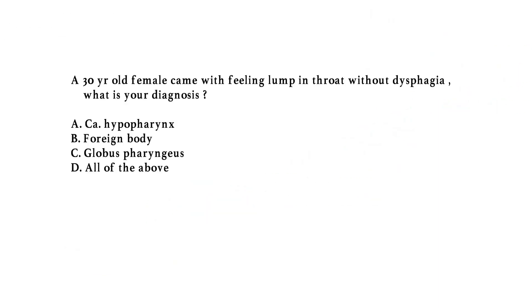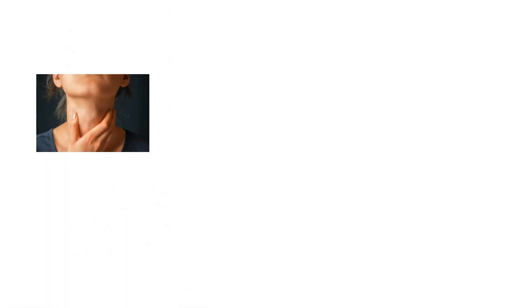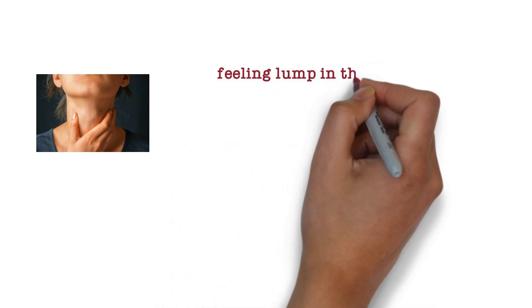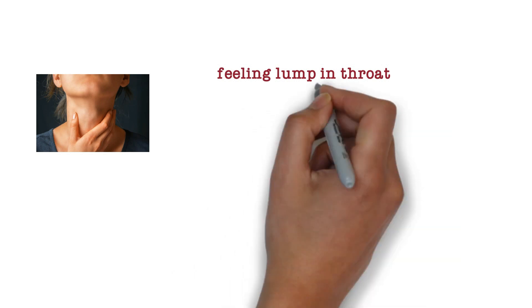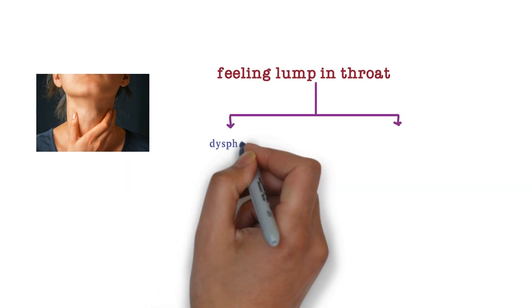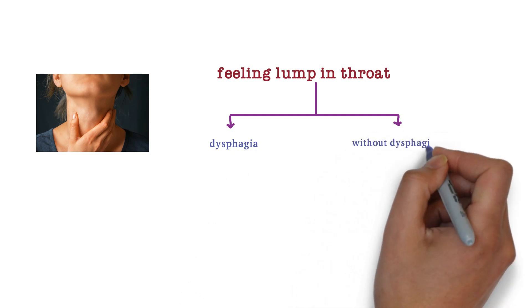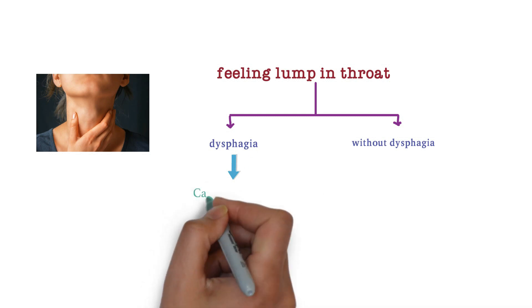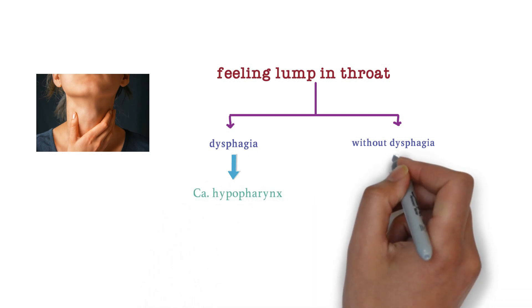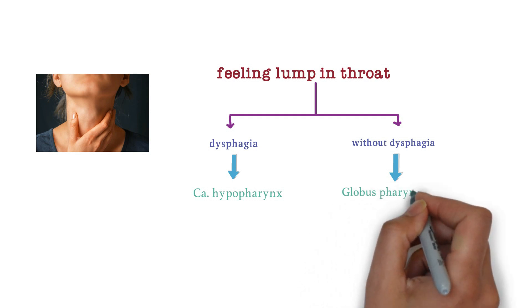Now let's talk about the second buzzword. A 30-year-old female came with feeling a lump in the throat without dysphagia. What is your diagnosis? Options are: carcinoma hypopharynx, foreign body, globus pharyngeus, and all of the above. The buzzword here is 'feeling lump in the throat.' We should look for whether it is with dysphagia or without dysphagia. If it is with dysphagia, then the answer is carcinoma hypopharynx.